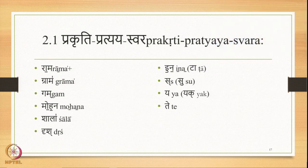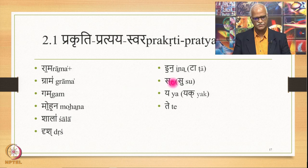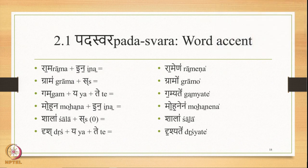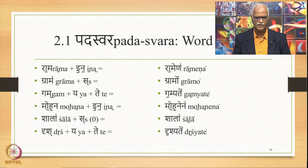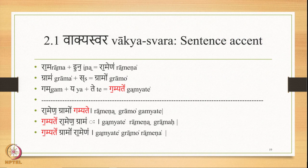The only change is this suffix, which is Subh, therefore it is Anudhatta. And Ye is Udhatta. Te is also Udhatta. When we join these elements together, we get the Pada accents of this kind: Ramena is middle Udhatta, Gamyate is middle Udhatta, and Mohanena has Ne as Udhatta. Shala has initial Udhatta. And Drishyate has the middle vowel as Udhatta. So now the Vakyaswara will be: Ramena Gramo Gamyate.